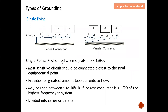Single point grounding is best suited when signals are less than 1 MHz — in other words, when the frequency is not so high. The most sensitive circuit should be connected closer to the final equal potential point. This point is referred to as the closest to the final equal potential point. So if you have a lot of sensitive devices, the most sensitive circuit is highly recommended to be placed at that point, whether in series or parallel connection.